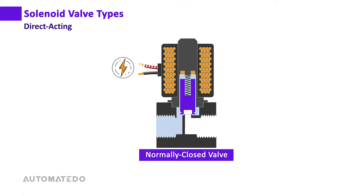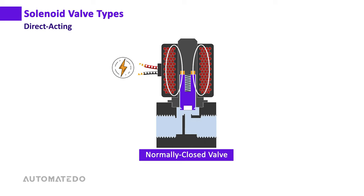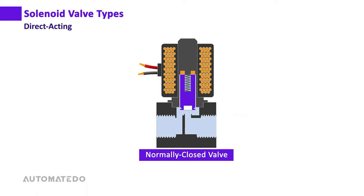When power is applied and current starts flowing through the coil windings, an electromagnetic field builds up. The force of this electromagnetic field causes the plunger to move upwards against the spring, so the orifice opens and allows the media to pass through.